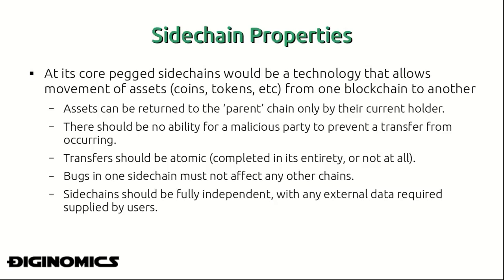These characteristics can be described as: assets are to be returned to the parent chain only by their current holder; there should be no ability for a malicious party to prevent a transfer from occurring; transfers should be atomic — completed in their entirety or not at all; bugs in one side chain must not affect any other chains; and finally, side chains should be fully independent with any external data required supplied by its users.